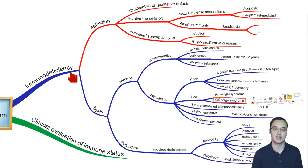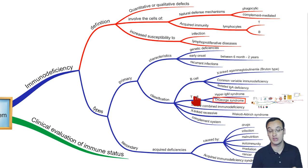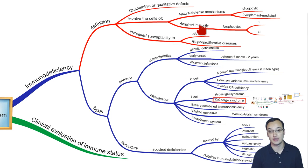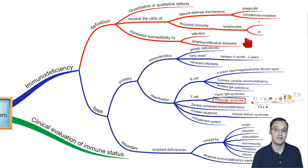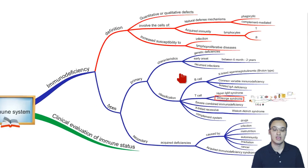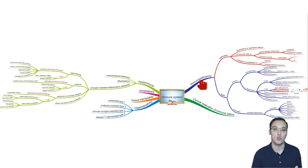Immunodeficiency, as we stated, is a quantitative or qualitative defect. In our case here, we had fewer T cells — a quantitative deficiency — and therefore infection is highly probable because we don't have the T lymphocytes that would otherwise defend us. The big picture is that this was one branch of the total immune system pathology.